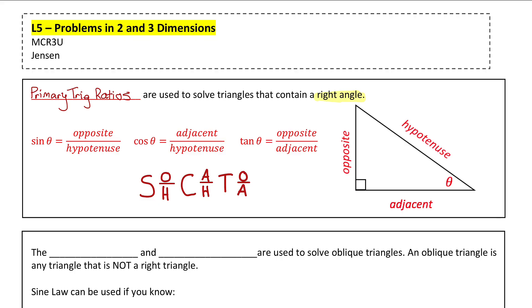But if you have a triangle that does not have a right angle — which we call an oblique triangle — SOHCAHTOA doesn't work. You have to use the sine law and the cosine law to solve for any missing sides or angles.